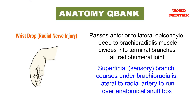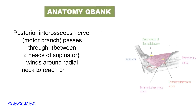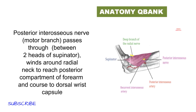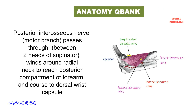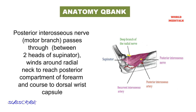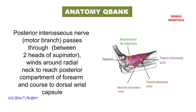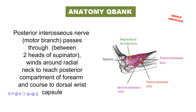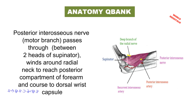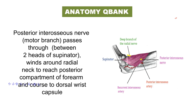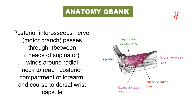In an isolated posterior interosseous lesion, sensation is spared and motor involvement occurs in the radial muscles distal to the supinator. The extensor carpi radialis is sometimes also spared, resulting in radial deviation on wrist extension. Pain may occur with palpation at the proximal forearm and with full supination. In a distal radial sensory lesion at the wrist, no motor weakness occurs, and numbness of the dorsum of the hand is noted, sparing the fifth digit.